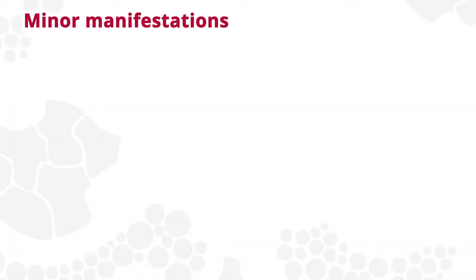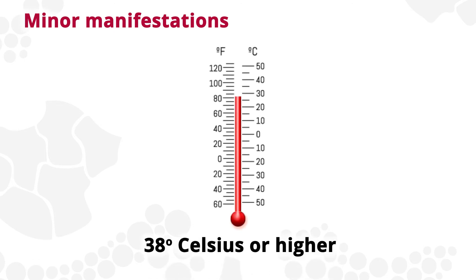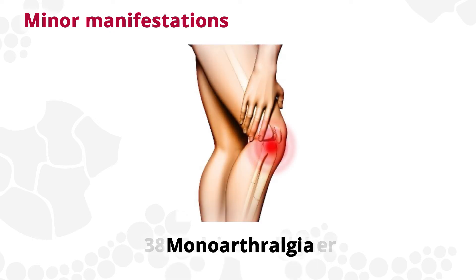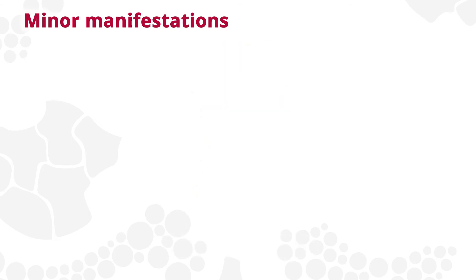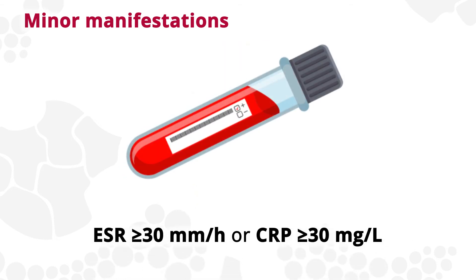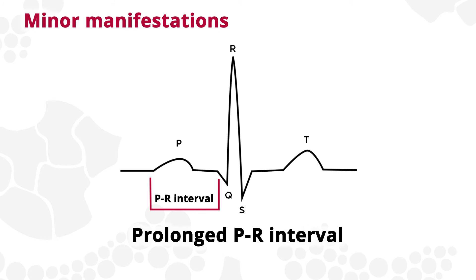The minor manifestations may be more familiar to clinicians. A fever of 38 degrees Celsius or higher can be transient and often accompanies all manifestations except Sydenham chorea. Monoarthralgia is a minor manifestation if joint pain hasn't been included as a major manifestation. A raised ESR (erythrocyte sedimentation rate) or CRP (C-reactive protein), and a prolonged PR interval on ECG, count as minor manifestations if carditis is not included as a major manifestation.